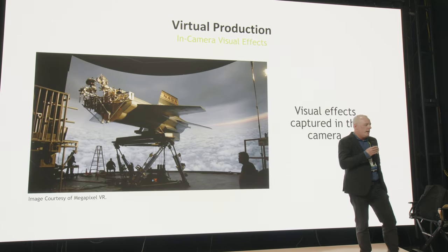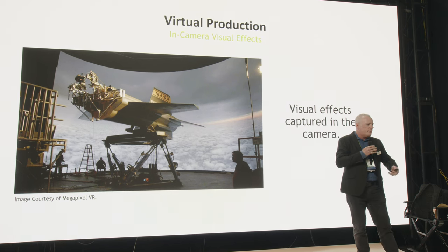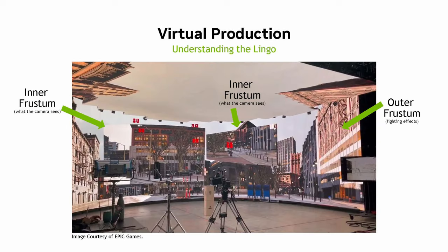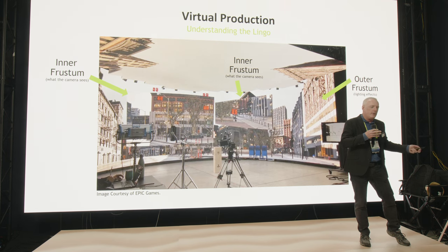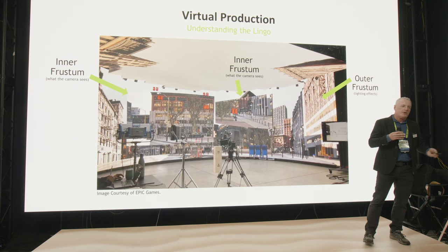How does this apply to in-camera visual effects (ICVFX)? We'll take SMPTE 2110 and PTP and apply them there. The inner frustum is what the camera sees, rendered at high resolution, while the outer frustum is the rest of the wall providing lighting into the scene, typically rendered at low resolution. You then composite the inner frustum, outer frustum, and lighting within the camera — that's your in-camera visual effects.